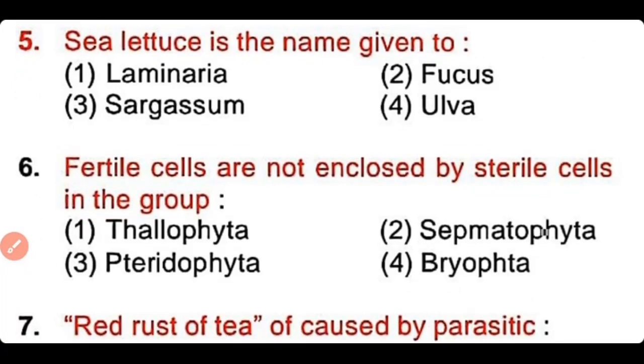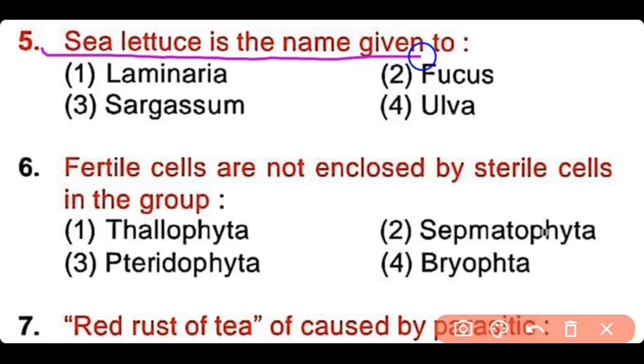Question number 5: 'Sea lettuce' is the name given to laminaria, fucus, sargassum, or ulva? The correct answer is option 4, ulva.